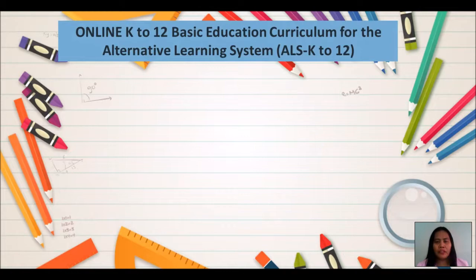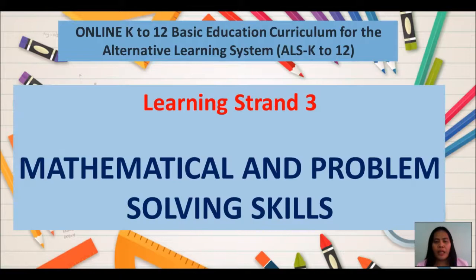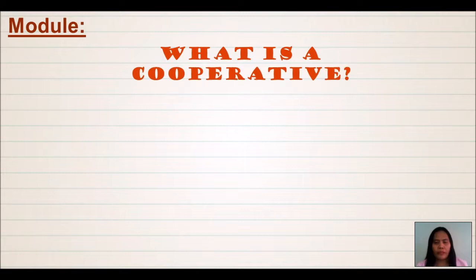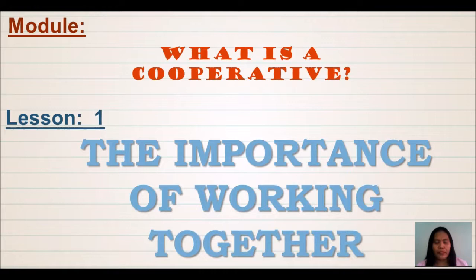Online K-12 Basic Education Curriculum for the Alternative Learning System. IELTS K-12 Learning Trend 3: Mathematical and Problem Solving Skills. Module: What is a cooperative? Lesson 1: The Importance of Working Together.